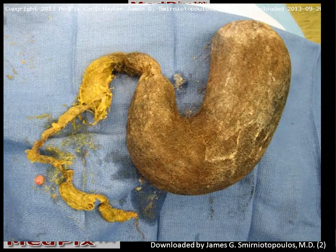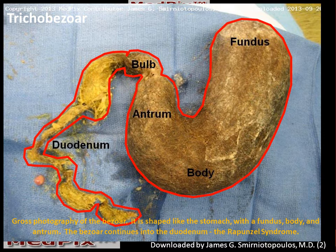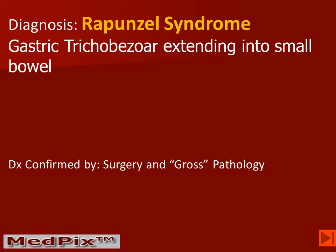Looking carefully at the specimen, we can see the fundus, the body, and the antrum of the stomach, the duodenal bulb, and what appears to be blonde hair in the location of the second and third portions of the duodenum. This is a patient that has a trichobezoar, and because the hair is extending out of the stomach and into the small bowel, it is sometimes called Rapunzel syndrome, proven by surgical resection.